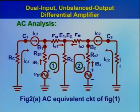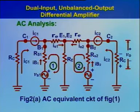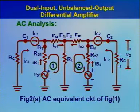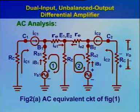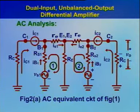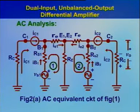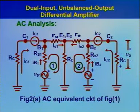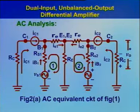In the AC analysis, we determine differential voltage gain, input resistance, and output resistance. To draw the AC equivalent circuit, replace transistors Q1 and Q2 with their T-equivalent circuits and set the DC biasing potentials VCC and VEE to zero. The AC equivalent circuit is as shown in figure 2a.